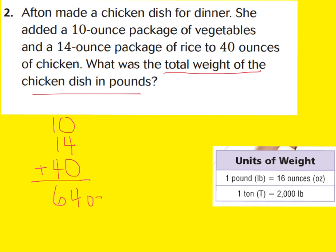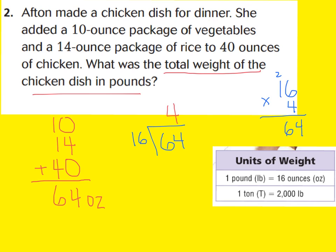We have 64 ounces total. Now the question is asking for the total weight in pounds. So we need to figure out how many pounds is 64 ounces. We do our second step and divide 64 ounces by 16 ounces to figure out how many pounds there would be. 4 times 16 is 64, and we subtract — there are no ounces left over. So we can say that there are 4 pounds for the total chicken dish.